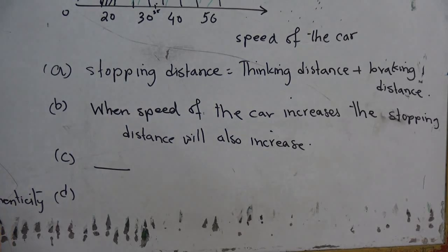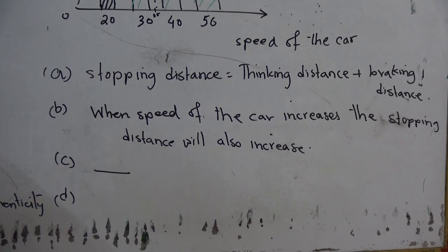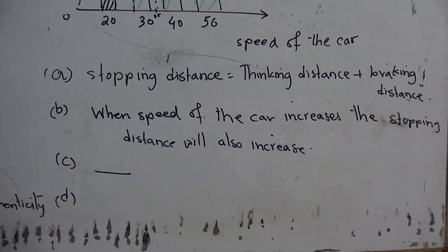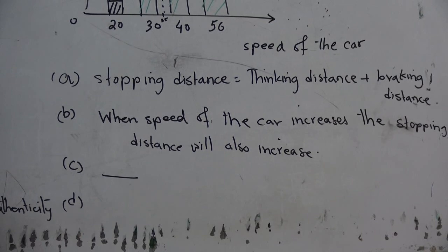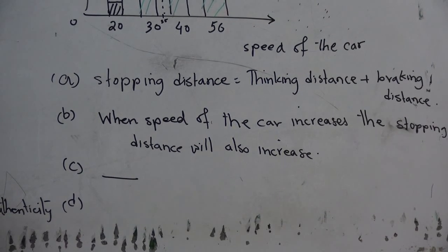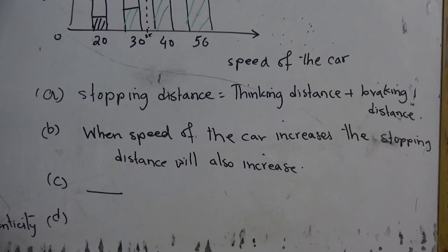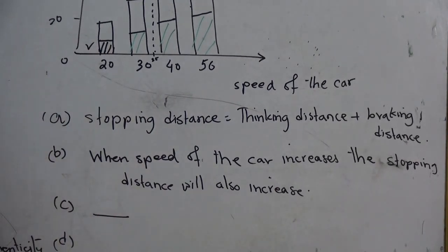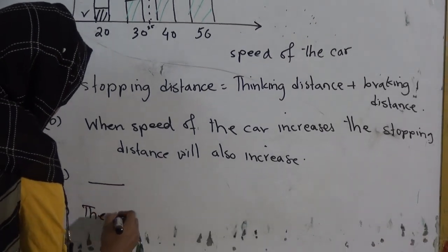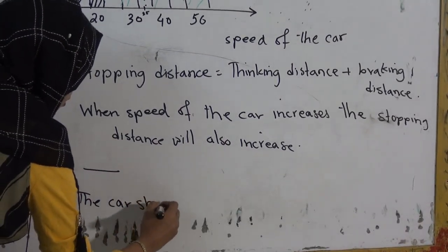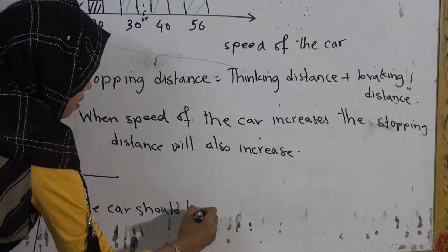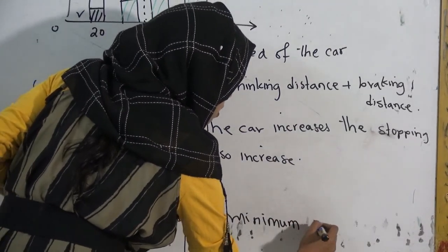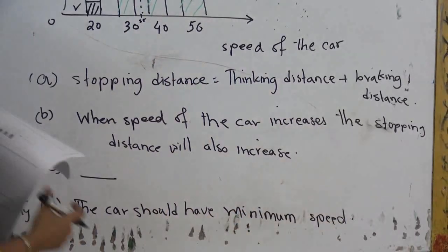Number D, to find the minimum stopping distance, several different cars were tested, suggest how the data from the different cars should be used to give the values in the graph. Since they have asked you for the minimum stopping distance, to have a minimum stopping distance, the car must have the minimum speed. In that case, you will write, the car should have minimum speed. That's it.